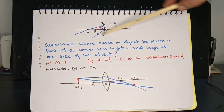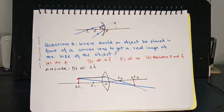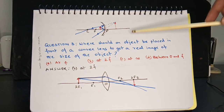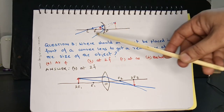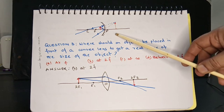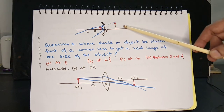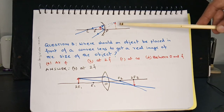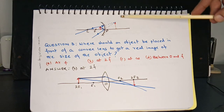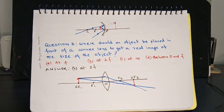This diagram explains how a virtual, erect, and larger image is formed by a concave mirror. This is the mirror and this is the object, placed between F and P. The image is found behind the mirror, and the dotted lines show that the image is a virtual image.